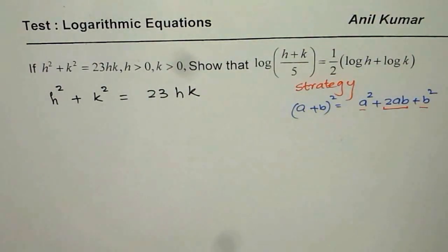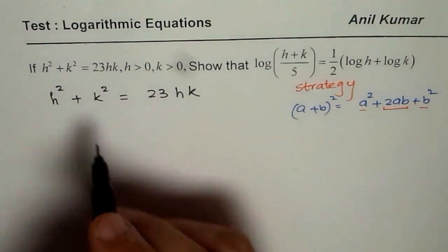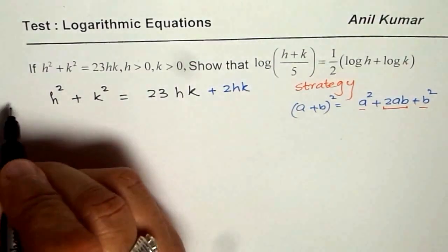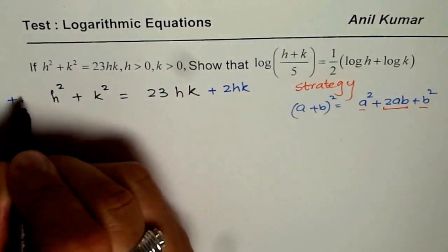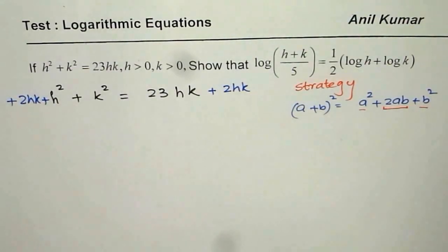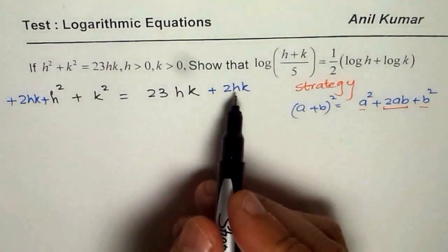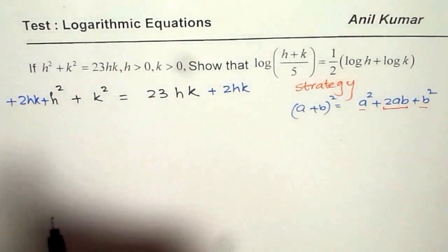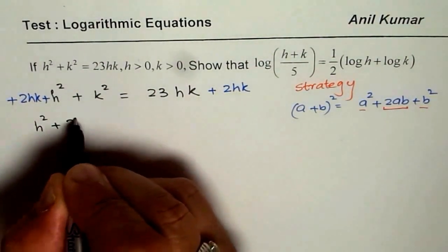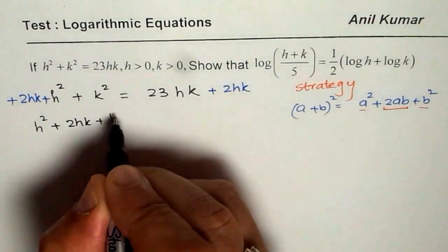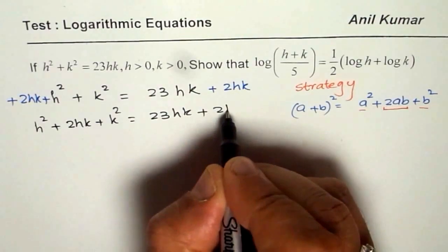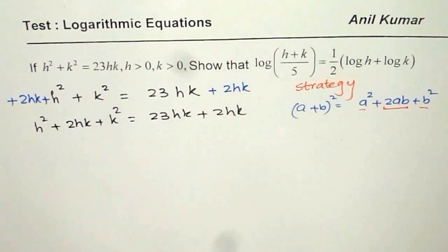So what should we do? Well, easy. We should add this missing number. So I will add 2hk on both sides. So I will say plus 2hk. So I have added that. Now, once I add same thing on both sides, which I can do since it is an equation, let me rewrite this. So I have h² + 2hk + k² = 23hk + 2hk. So I have added 2hk on both sides.